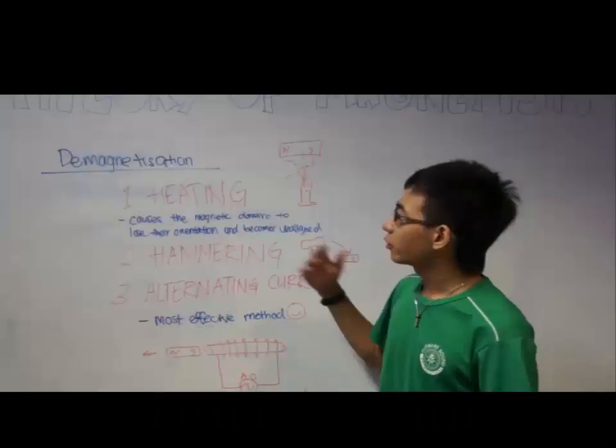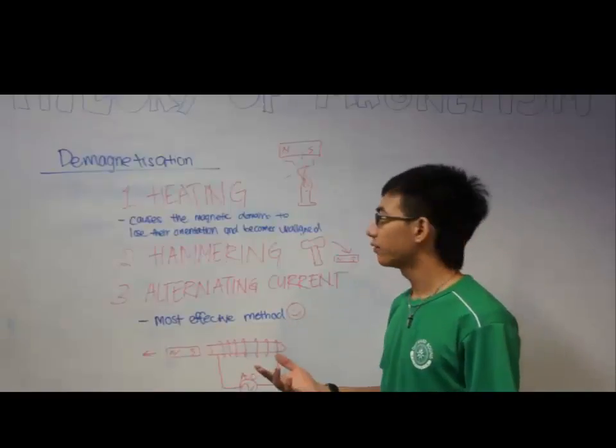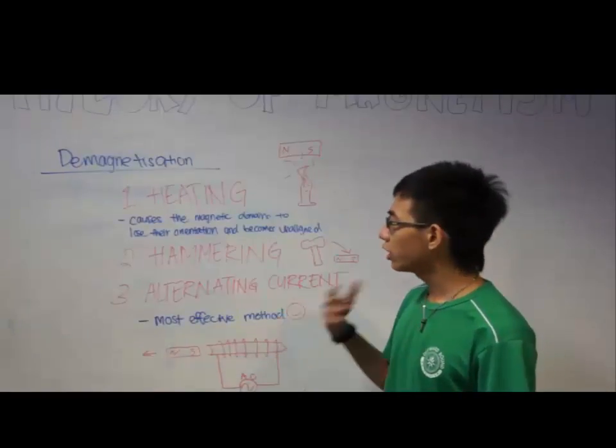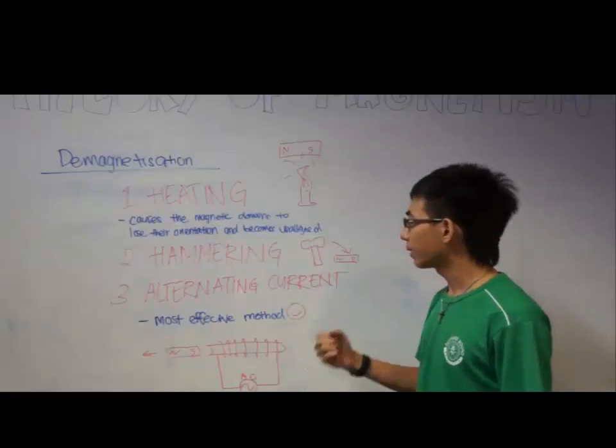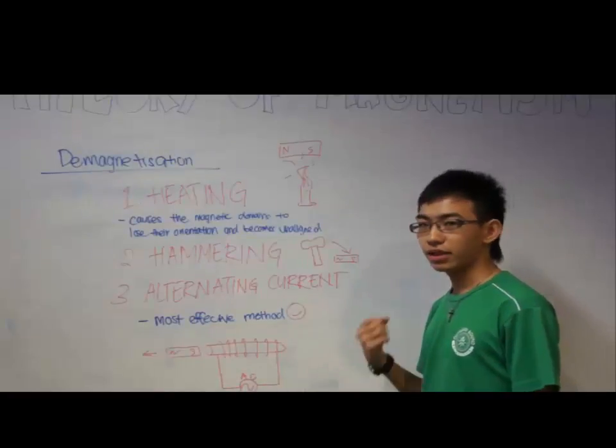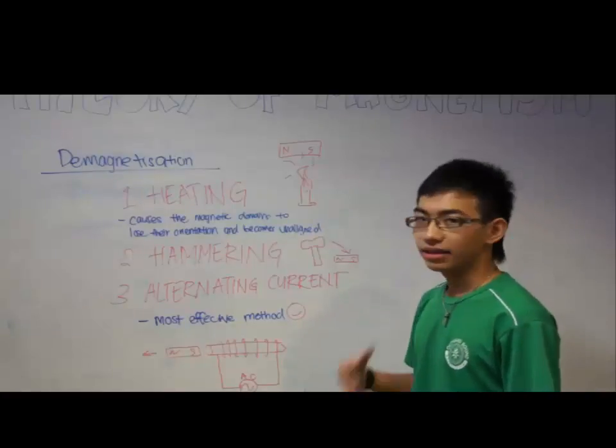Now we have come to demagnetizing. How do you demagnetize a permanent magnet? First, you heat. Through heating, it will cause the magnetic domains to lose their orientation and become unaligned. The magnetic effects will cancel each other and cause it to lose its magnetism.